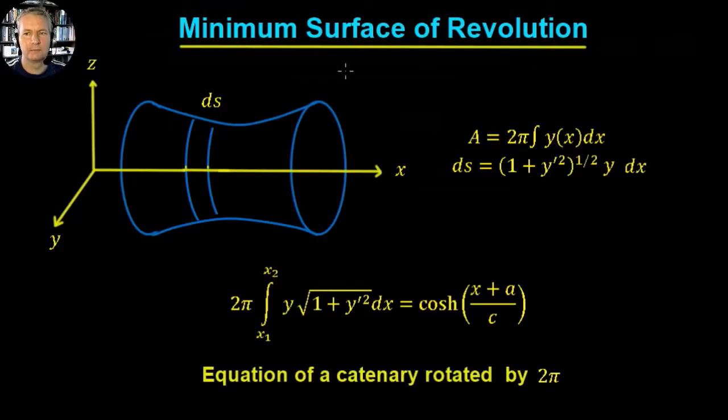In this video we're going to look at the minimum surface of revolution. So the idea is that we have a curve here, and whenever we revolve that curve around 360 degrees, the question is what curve will give us the minimum surface area.